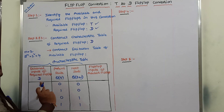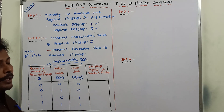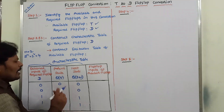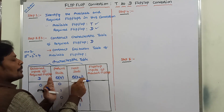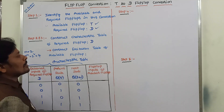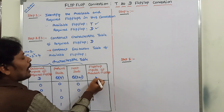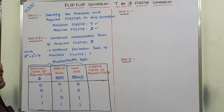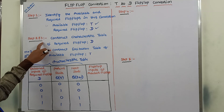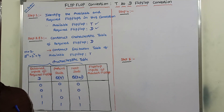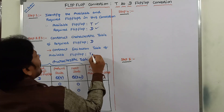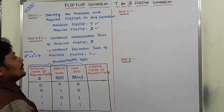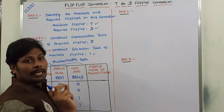Once we construct the characteristic table of the required flip-flop, we then construct the excitation table. Step 3 is to construct the excitation table of the available flip-flop — here, the T flip-flop. We have to find out the excitation table for the T flip-flop.